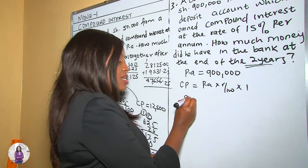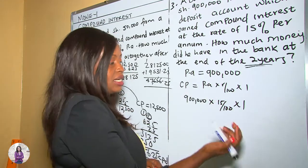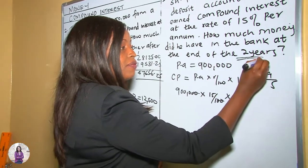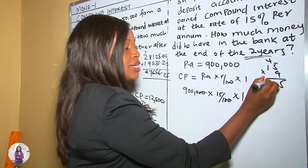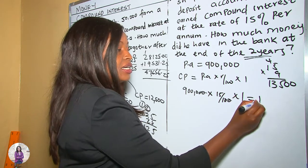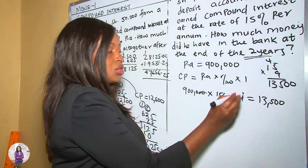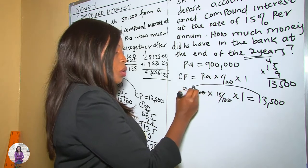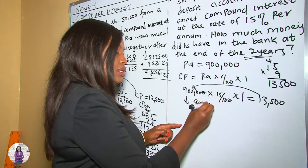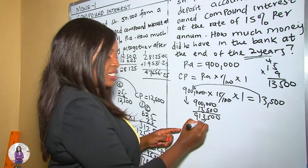For year one: CI = 900,000 × 15/100 × 1. Working this out: 15 × 9 = 135, giving 135,000 divided by 10 = 13,500. So the compound interest for the first year was 13,500 shillings. Adding to the principal: 900,000 + 13,500 = 913,500, which is the principal for the second year.